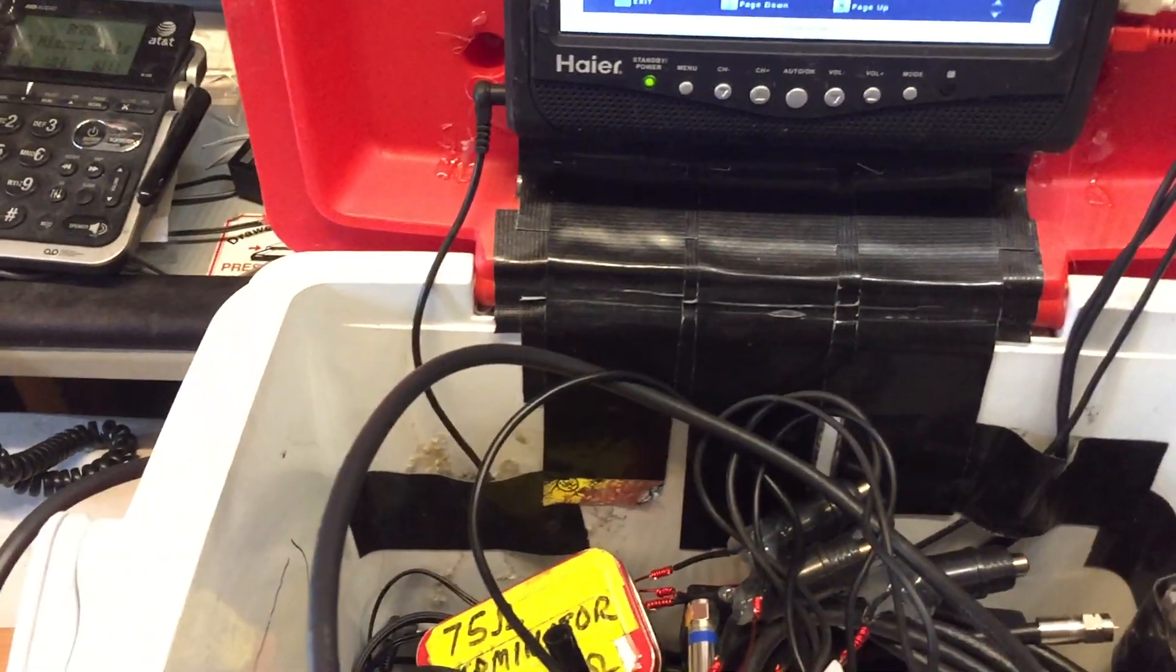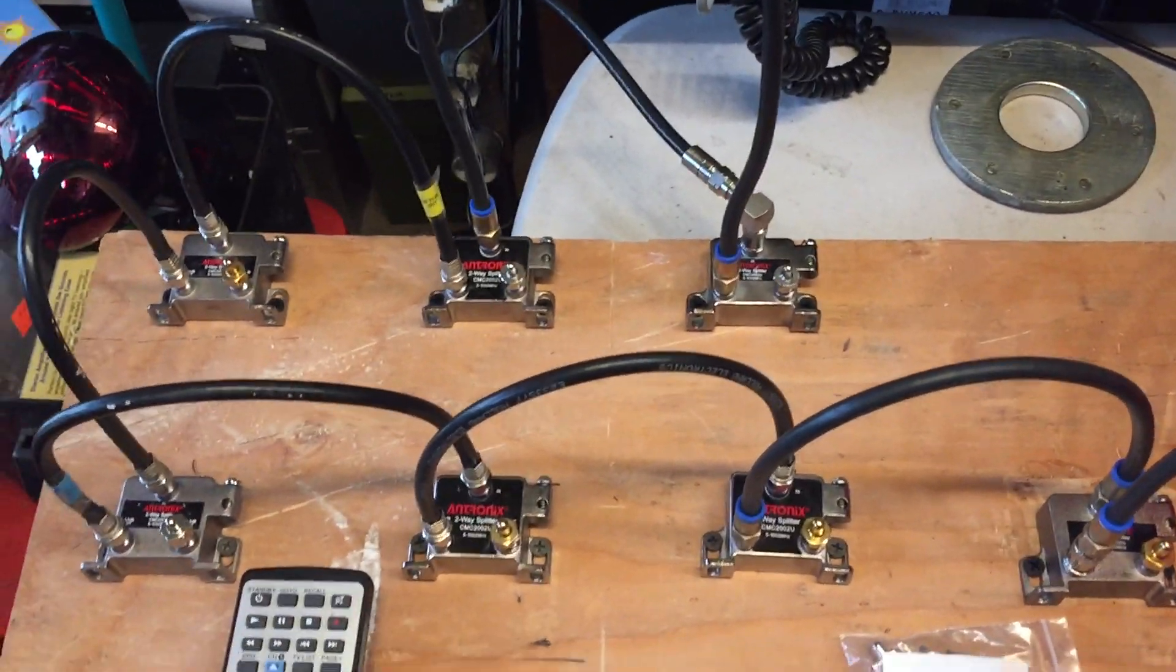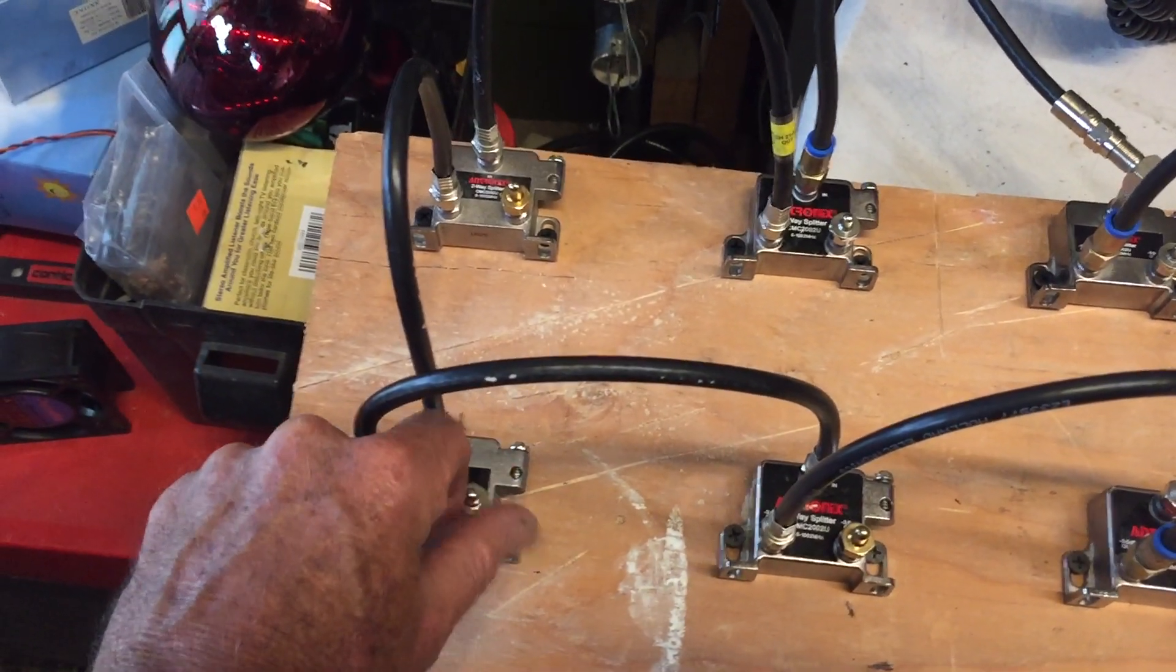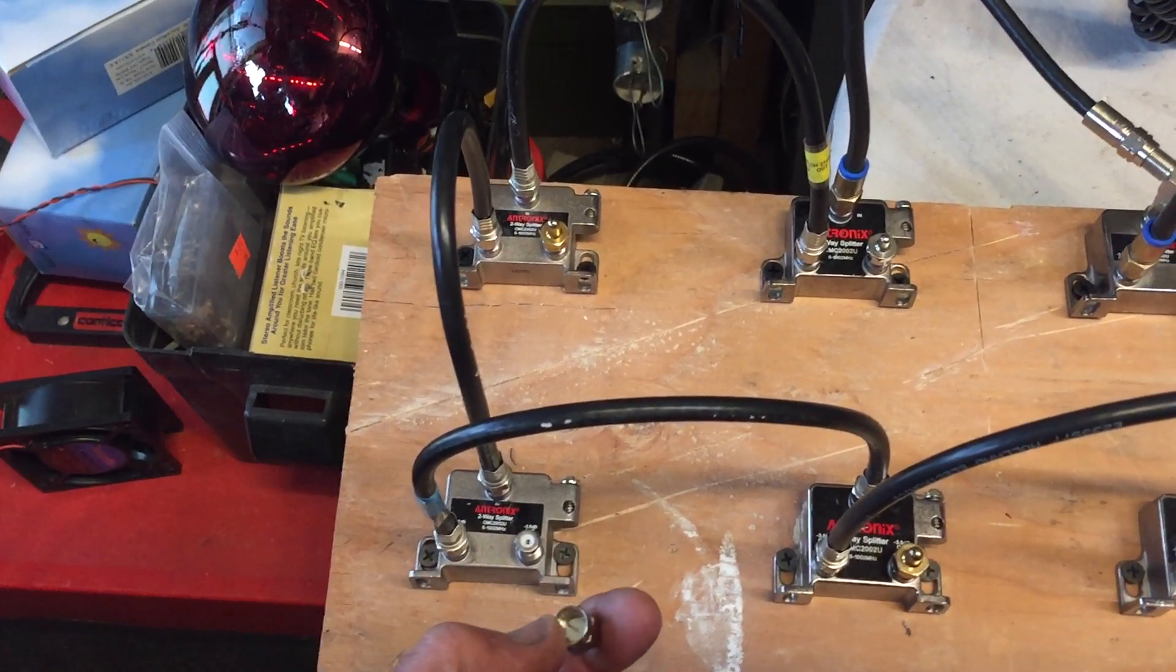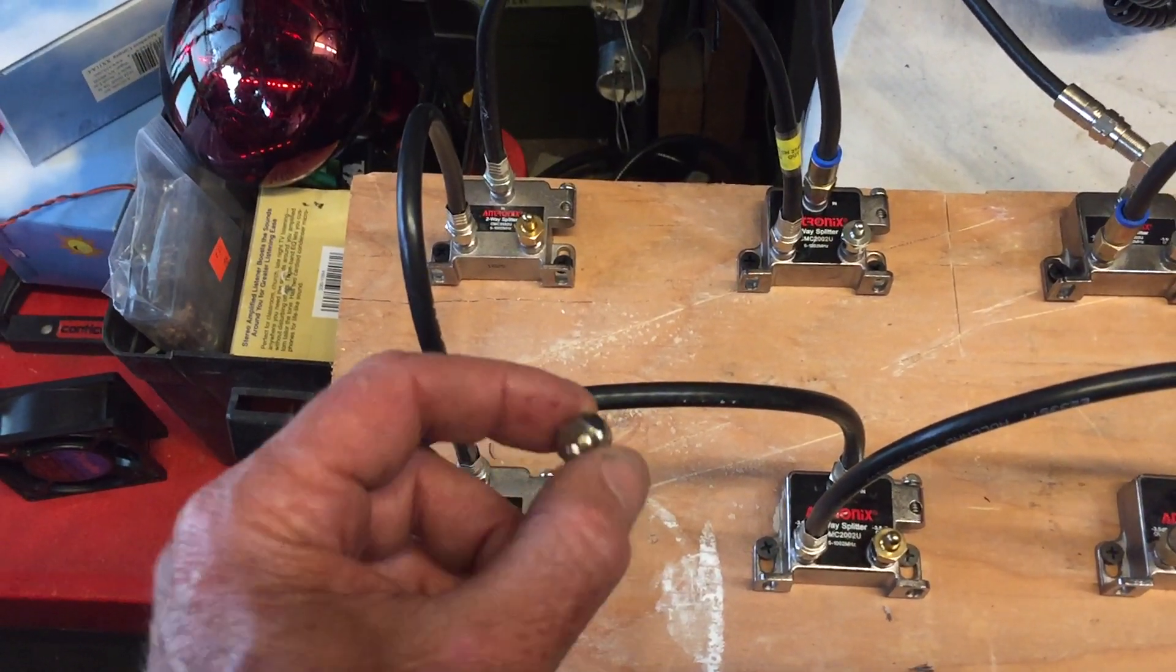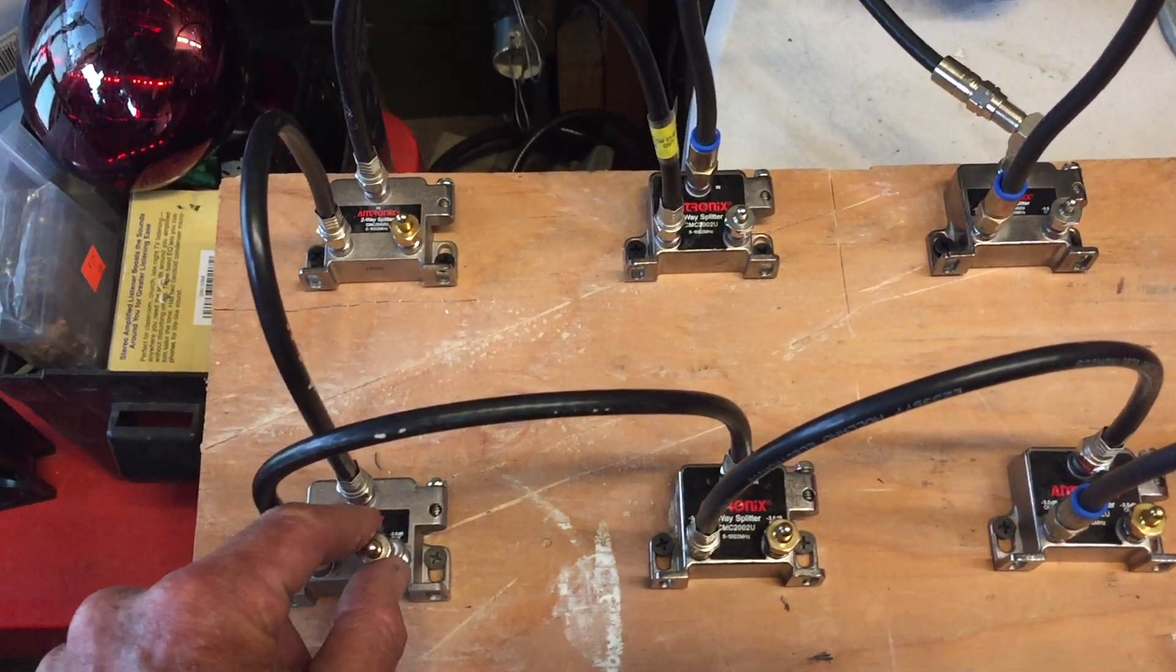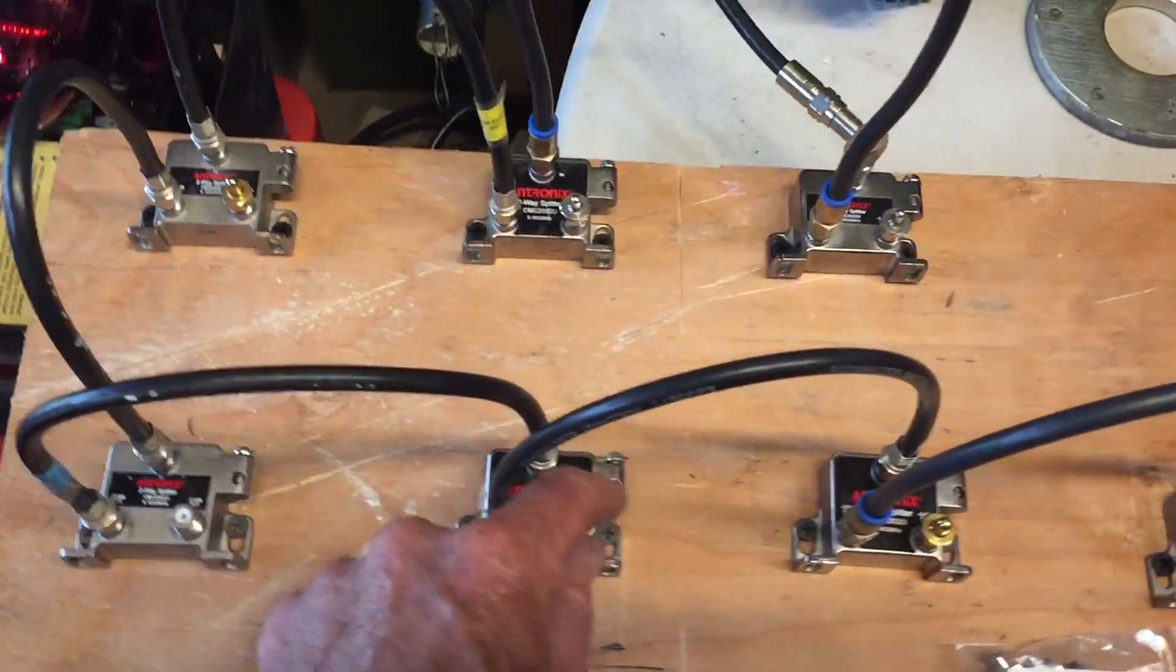And it's doing a halfway decent job even going through all these splitters here. So then I was thinking about terminators. Now, terminators are the little 75 ohm resistors you're supposed to screw on the ports you're not using here, and they're supposed to work kind of like a dummy load. I guess they can absorb reflections that can be in the signal or in the cable.